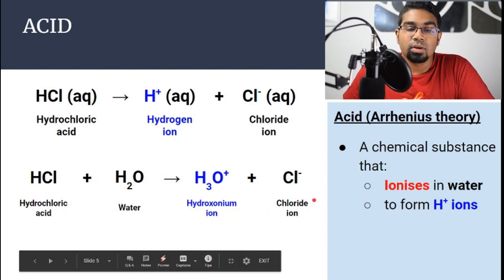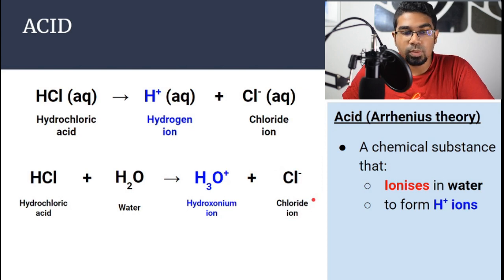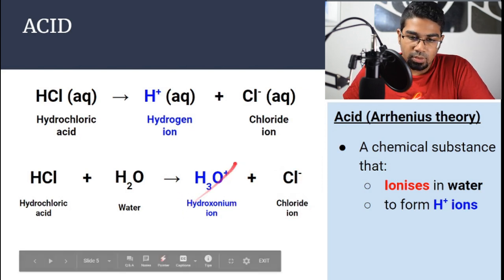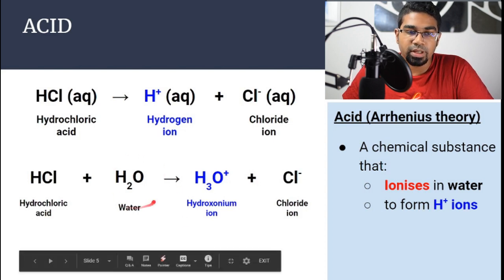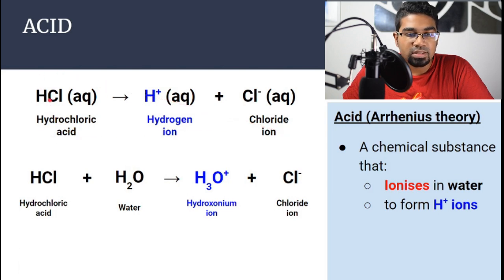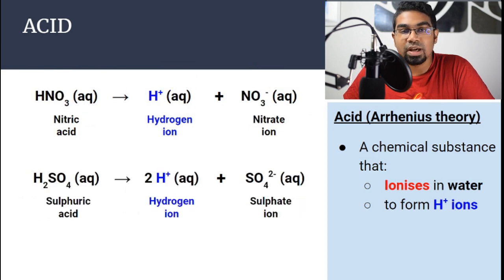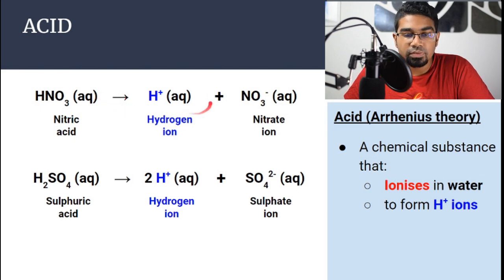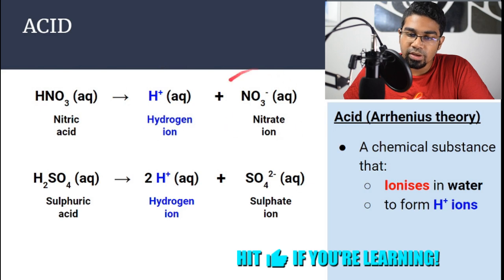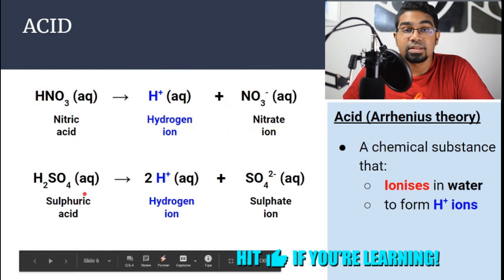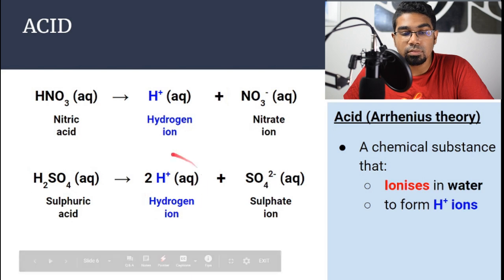However, in order to simplify matters, we normally ignore the hydroxonium ion and don't write water on the left. So normally, this is written as: HCl → H+ + Cl⁻. These are examples of other acids: nitric acid HNO₃ dissociates in water to form H+ and nitrate ions. Sulfuric acid dissociates in water to form H+ ions and sulfate ions.